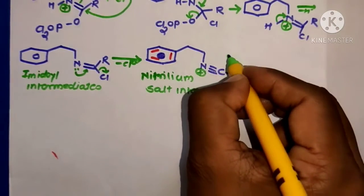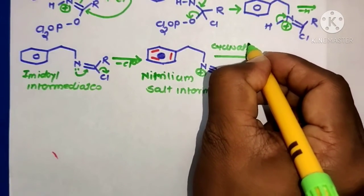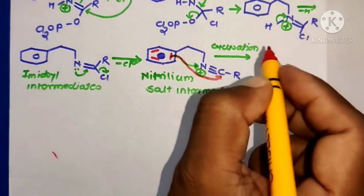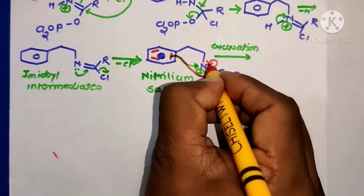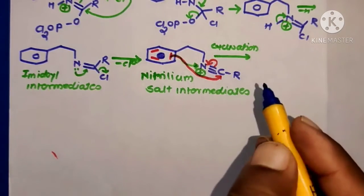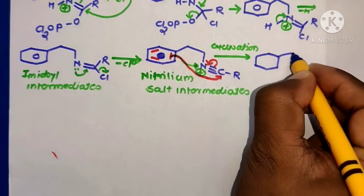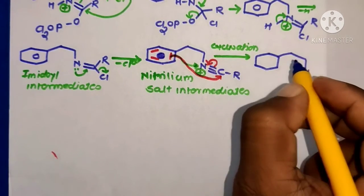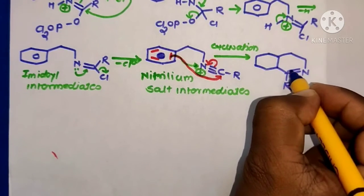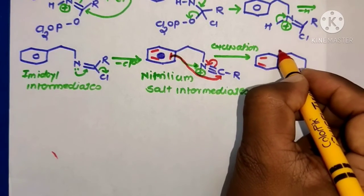The next step is cyclization. The pi bond electrons shift toward the carbon atom, and the bonding electrons shift toward the nitrogen atom, forming a bicyclic molecule: benzene nucleus fused with CH2-CH2-N=C(R)-, with double bonds forming in the ring and a positive charge present.